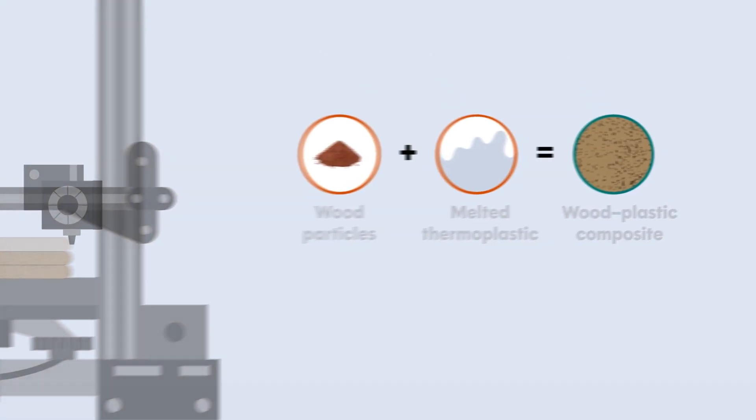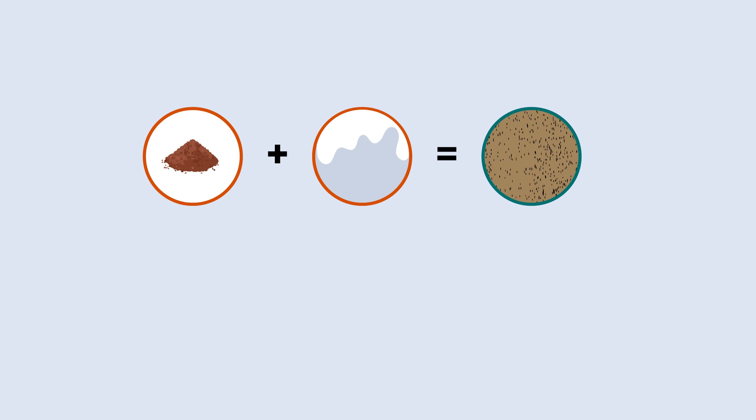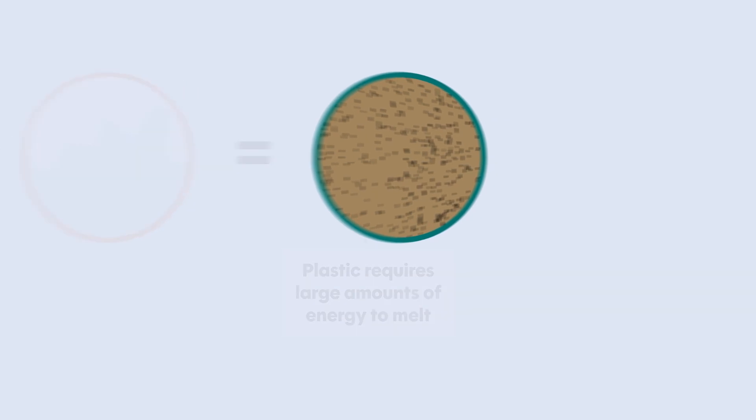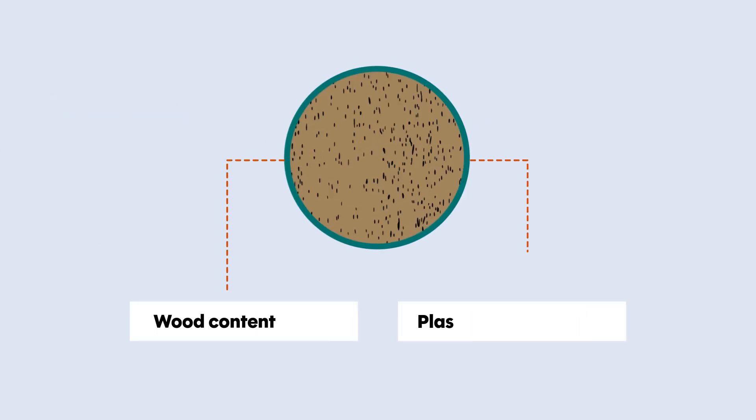However, this technique comes with two key drawbacks. Not only does the plastic require large amounts of energy to melt, but only a limited proportion of wood can be used in the mixture to maintain desirable material properties in the final product.